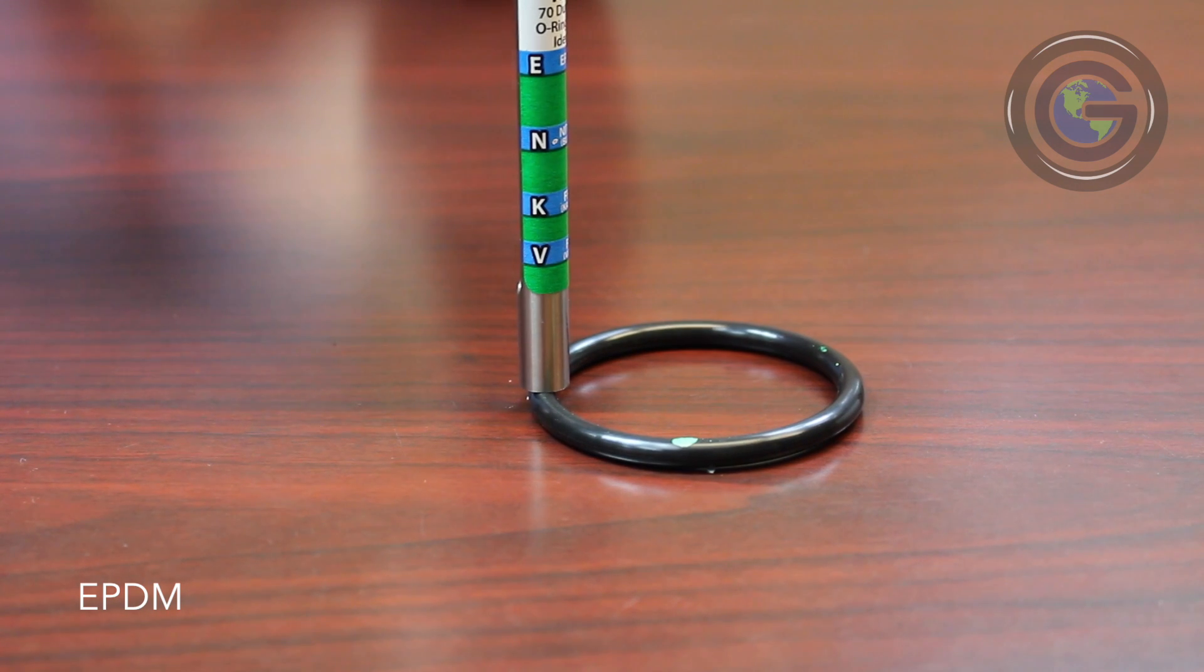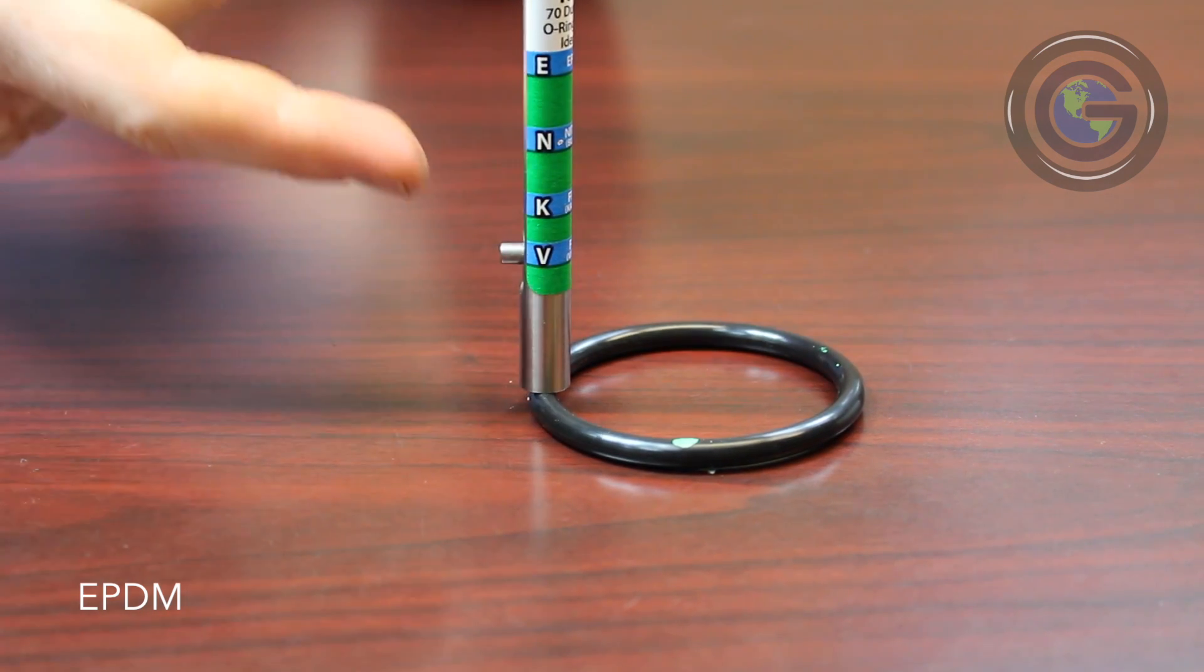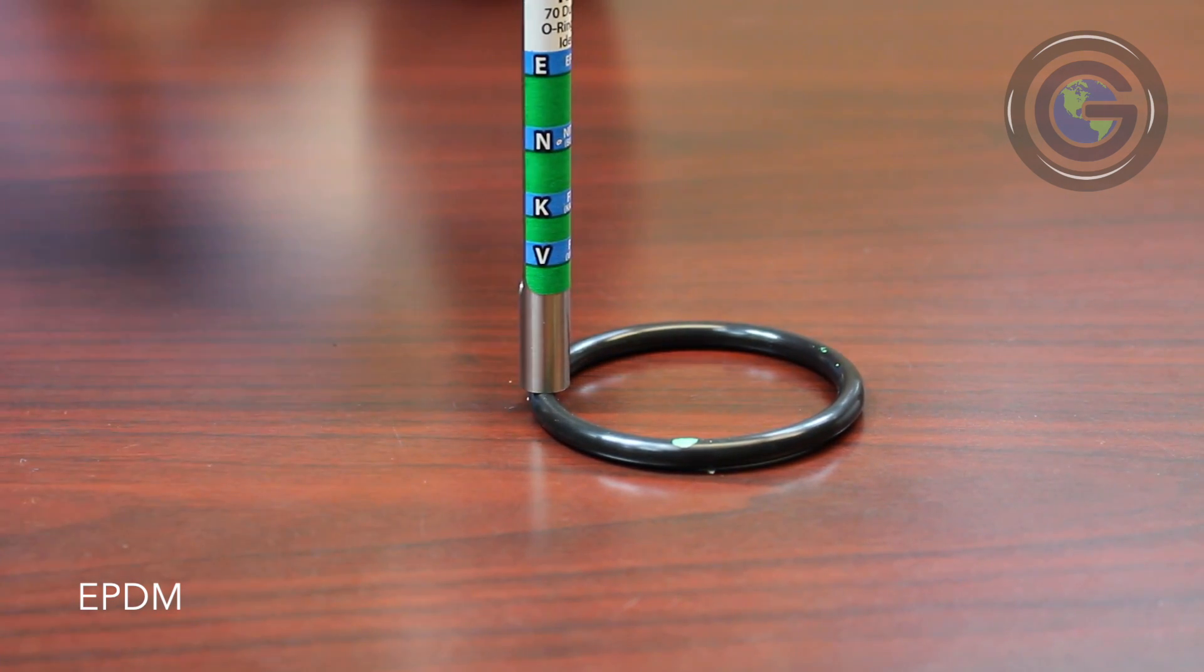On an EPDM O-ring, the weight will bounce back again, only this time all the way above the E-mark.